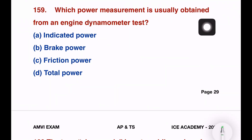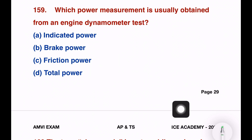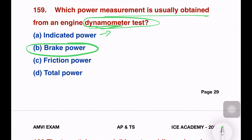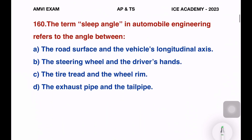Next question. Which power measurement is usually obtained from the engine using a dynamometer test? Options: indicated power, brake power, friction power, or total power. The dynamometer test gives brake power.